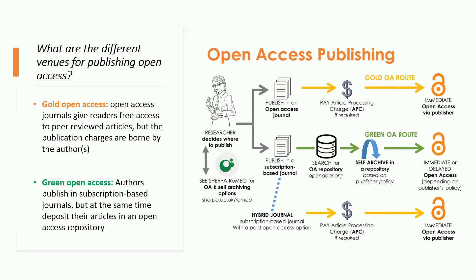What are the different venues for publishing open access? Broadly speaking, there are two models for open access publishing: gold and green. Gold open access journals give readers free access to peer-reviewed articles, but the publication charges are borne by the authors. Today, most big publishers offer open access options and some, like PLOS, are purely open access. There are several major directories of open access journals, most notably the Directory of Open Access Journals, or DOAJ, which can help researchers identify open access journals in their field. Under the gold open access model, authors have different kinds of journals to choose from.